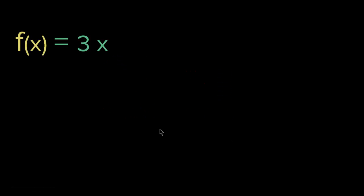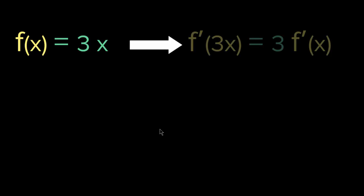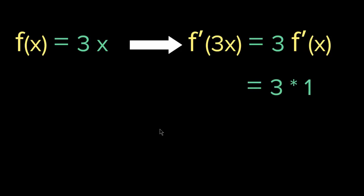Let me give you a couple of examples. Let's say f of x equals 3x. What is the derivative of that? Well, f of x equaling 3x gives us 3 times f prime of x, or 3 times the derivative of x. We know that the derivative of x is 1. Therefore, 3 times 1 is just 3. So the derivative of f of x equals 3x is 3.